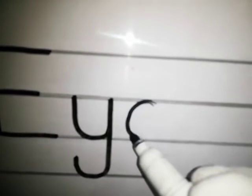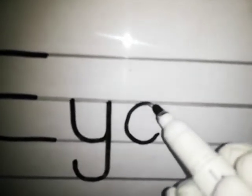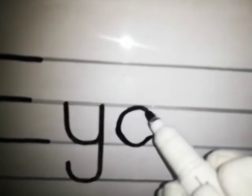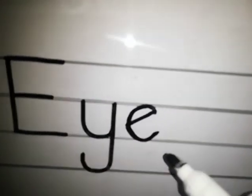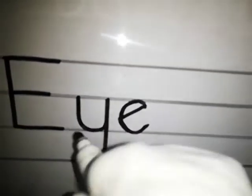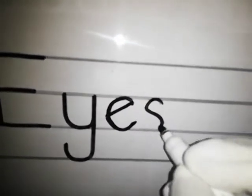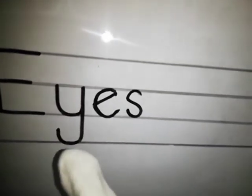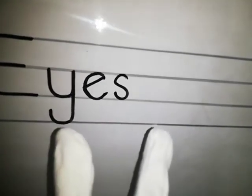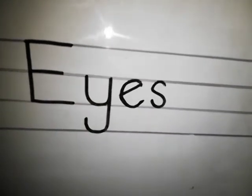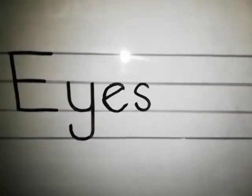If we write E-Y-E, that means a single eye — one eye. The formation of small e is a half circle in the grass lines and a slanting line. This is E-Y-E for one eye, and if we put S with E-Y-E, it becomes eyes — our two eyes. E, Y, E, S — eyes.